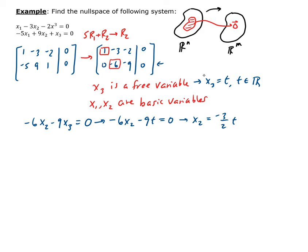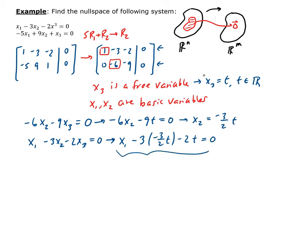Now we need to solve for x1. Looking at the first row: x1 minus 3x2 minus 2x3 equals 0. Substituting x2 equals minus 3 halves t and x3 equals t, we get x1 minus 3 times (minus 3 halves t) minus 2t equals 0, so x1 plus 9 halves t minus 2t equals 0. Solving, x1 equals minus 5 halves t.